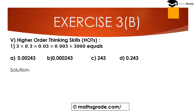Question number 5, high order thinking skill (HOTS). First question: 3 multiplied with 0.3, multiplied with 0.03, multiplied with 0.003, multiplied with 3000. First multiply the whole numbers: 3 × 3 = 9, 9 × 3 = 27, 27 × 3 = 81, 81 × 3 = 243. In 3000 there are 3 zeros, so we append 3 zeros to get 243000. Now count total digits after the decimal: 0.3 has 1 digit, 0.03 has 2 digits, 0.003 has 3 digits — total 6 digits after the decimal point.